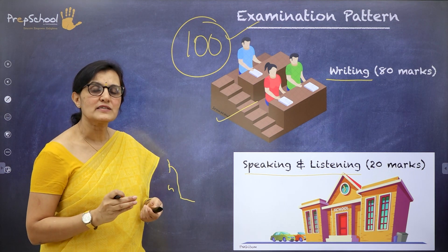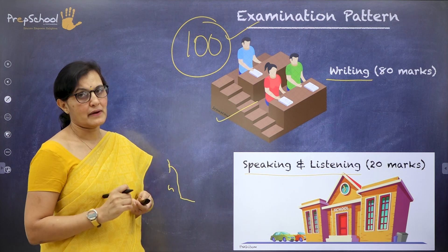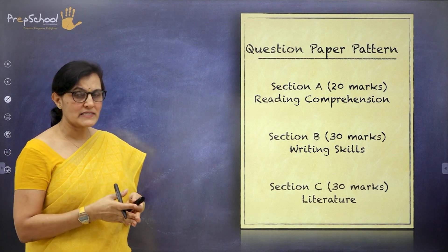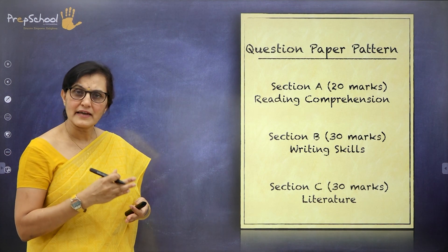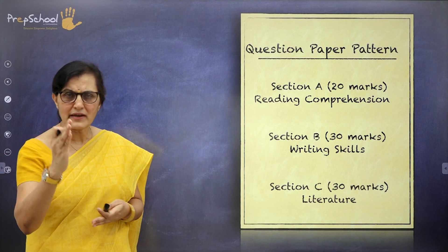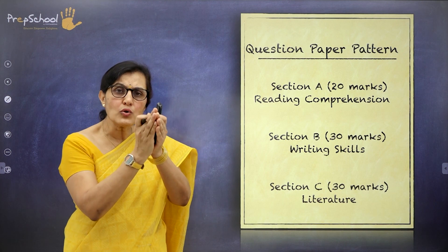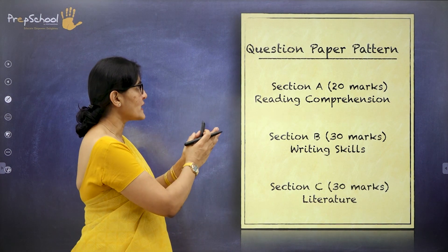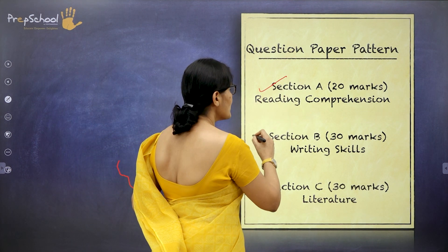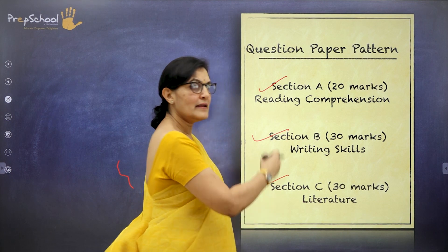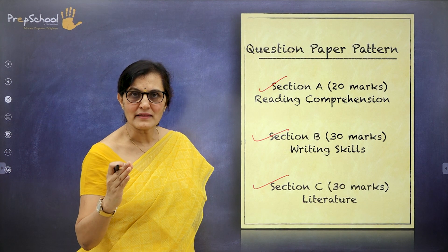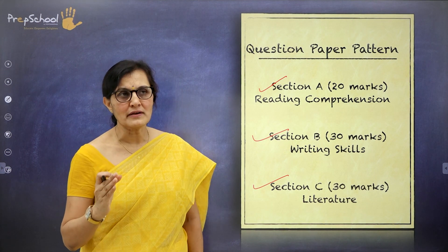Let's look at how your examination question paper looks. This is your question paper pattern. I told you about the examination pattern earlier — writing and internal assessment. Now I am going to touch only the writing part. If you look at the question paper pattern, it is divided into three parts: Section A, B, and C. All sections carry equal marks, meaning they are equally important.